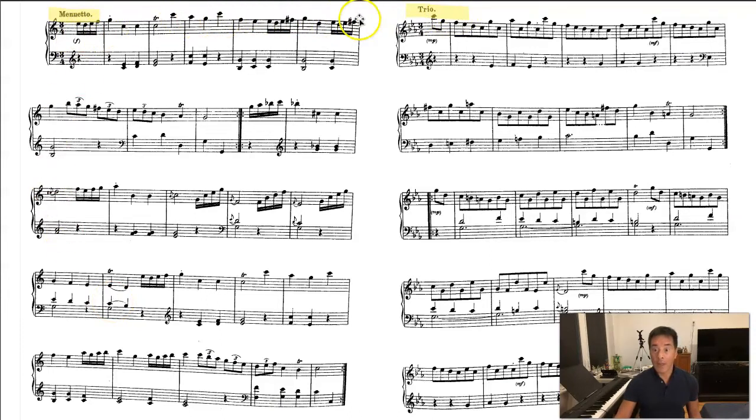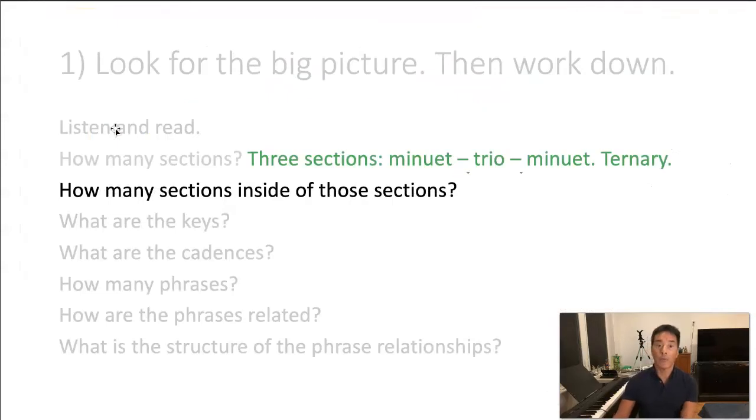So you can see here that it is divided into what looks like two sections, the minuet and the trio. But you should notice down here that it says M-D-Capo. So what does that mean? It means minuet da capo. Go back and play the minuet all over again. So it turns out that it really is A-B-A. This is a ternary form because you're going to play the minuet, then the trio, then the minuet. So the overall form is ternary.